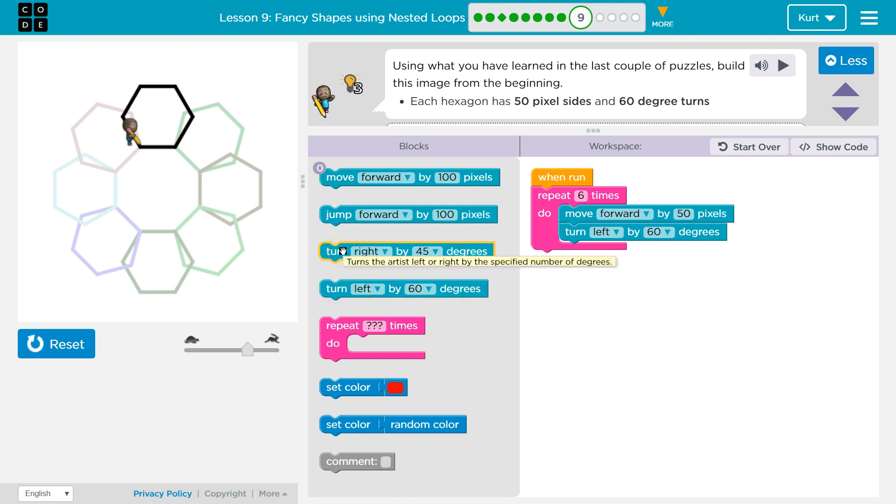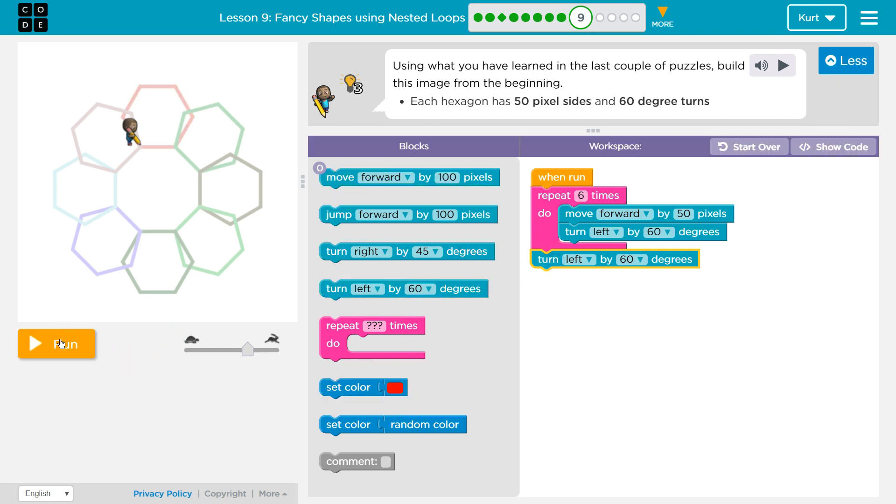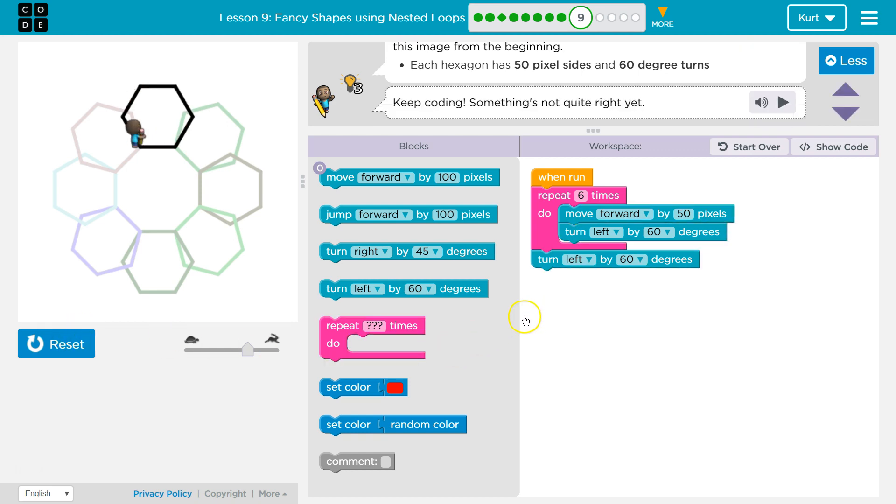Well, they do have this turn right 45. I wonder if it's 45, but I think I would have to turn left. Or would it be 60? All right. Let's try the 60 one. I'm not sure. I'm going to try 60. Let's see if it looks like I'll be able to draw the next hexagon.